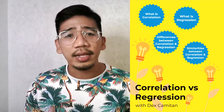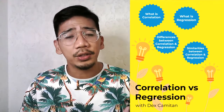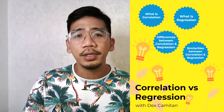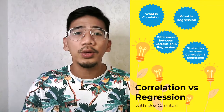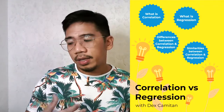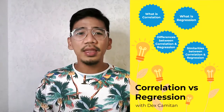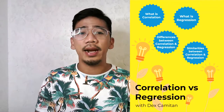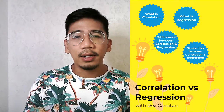Use correlation for a quick and simple summary of the direction and strength of the relationship between two or more numerical variables. Use regression when you are looking to predict, optimize, or explain the response between the variables — in other words, how X influences Y. In this video, we are going to define what correlation and regression are, and look into the differences and similarities between them.